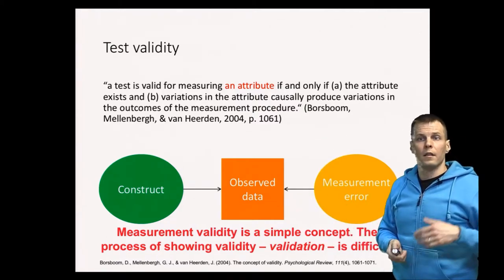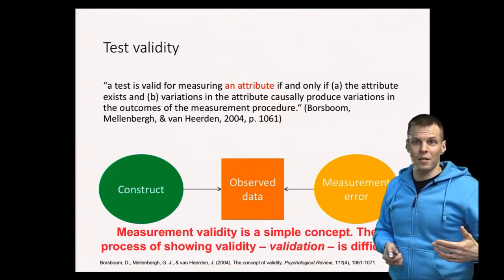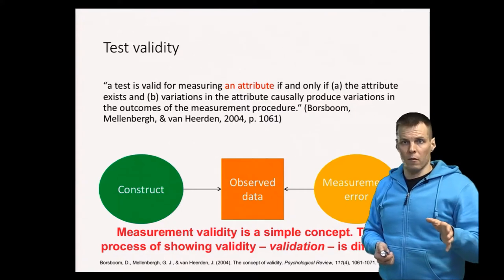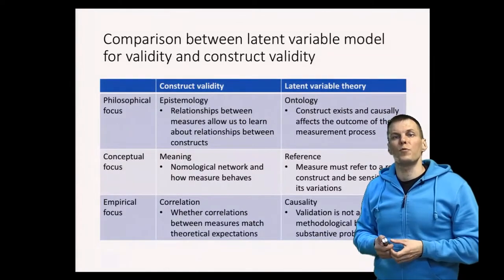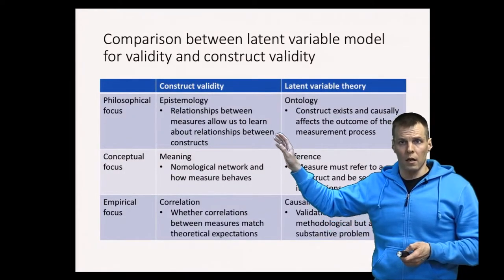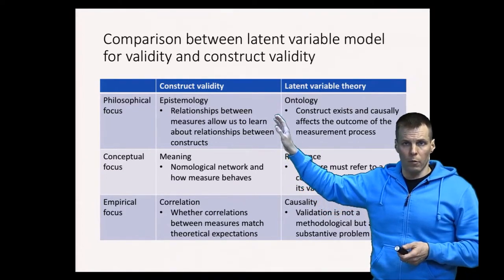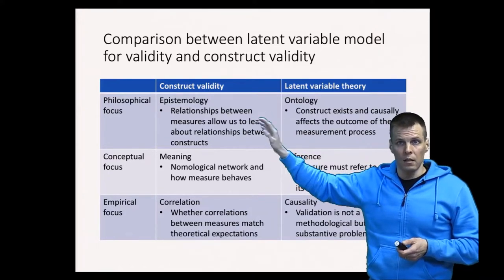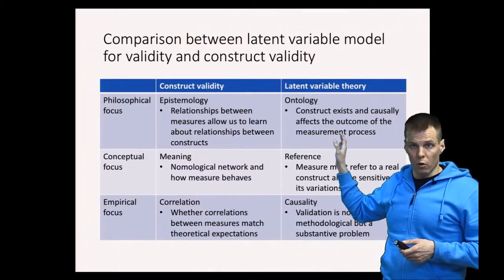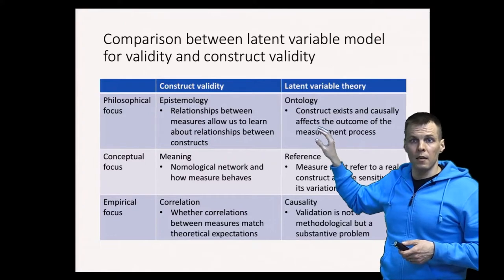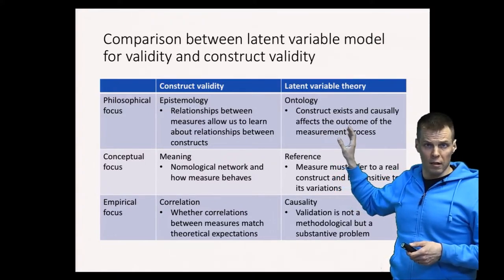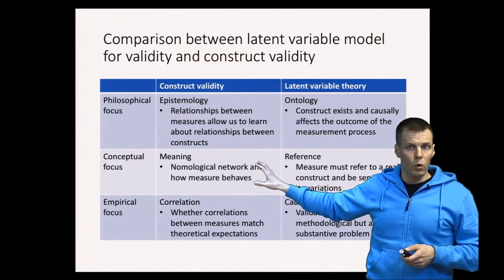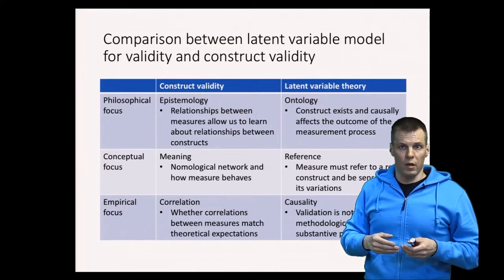To understand validation, compare the latent variable model for validity with construct validity. The construct validity perspective is more about epistemology — what can we learn from the correlations in our data about constructs? The latent variable theory is about ontology — does the attribute exist, and does variation in the attribute produce variation in the test score? In construct validity, the focus is on the meaning of correlations and whether we can generalize from observed correlations to theoretical ones.